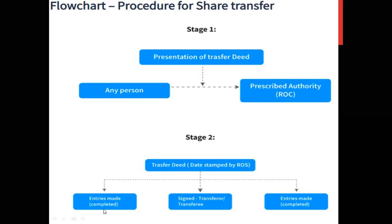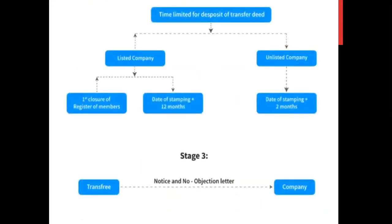The Registrar of Companies helps complete all entries and formalities, makes the transfer deed, and puts the stamp and date on it. The signatures of both the transferor and transferee are taken and all formalities are completed. Regarding the time limit for deposit of the transfer deed: for a listed company, you have two options — either the closure of the register of members, or the date of stamping plus 12 months. For an unlisted company, the time limit is the date of stamping plus two months.